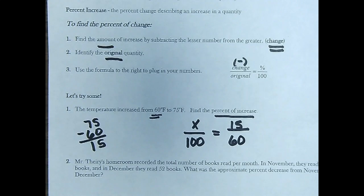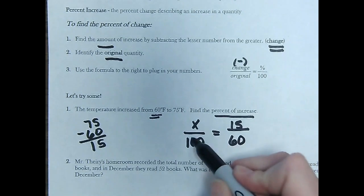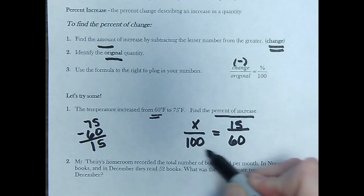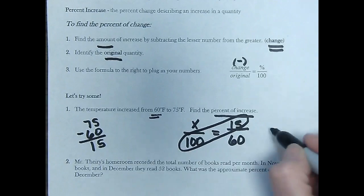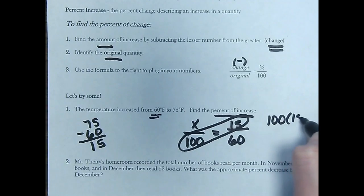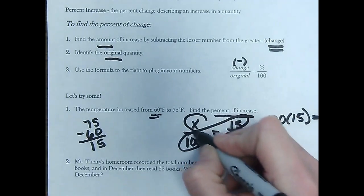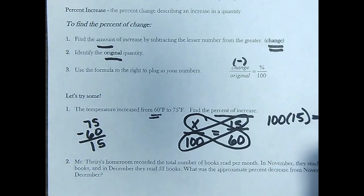Now we're going to use the cross products to solve. Because 60 won't go into 100 evenly, so I can't scale up. So we're just going to do 100 times 15 equals 60 times x.